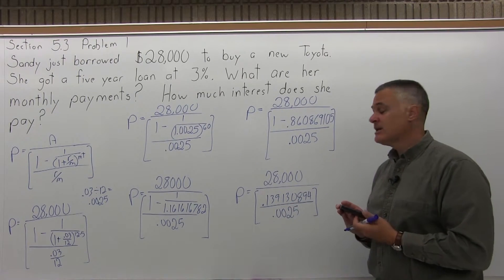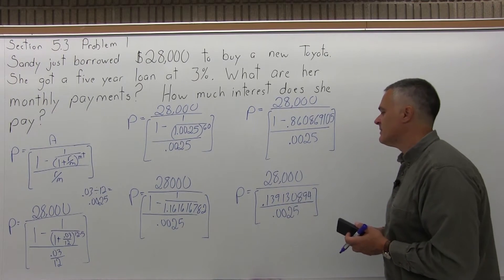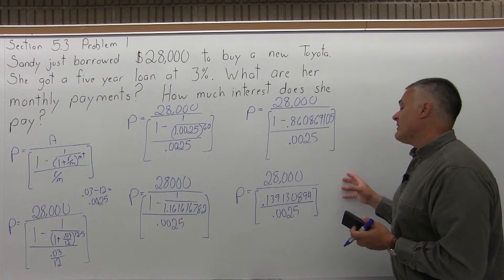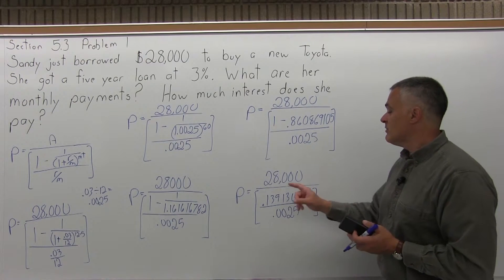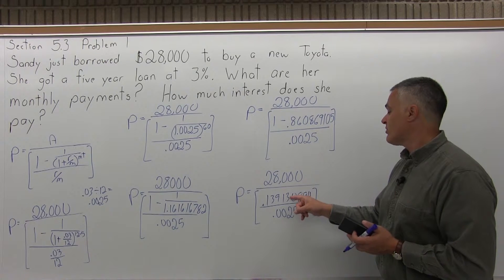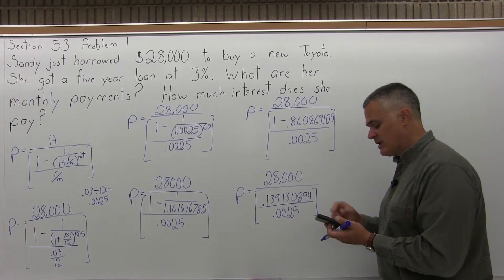Now again, I'm keeping a lot of decimals. I'm going to keep the decimals going until the end, and I'll just round them to two places for how many pennies. Now, I have 28,000 over a division in my bracket. So let me do that division. The division would be 0.139130894 divided by 0.0025. So let me do that division right now.